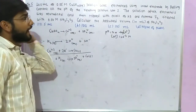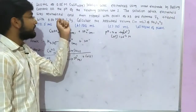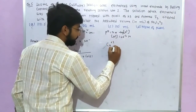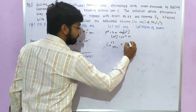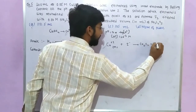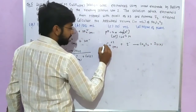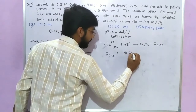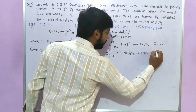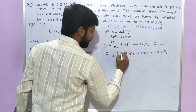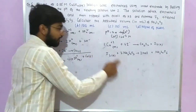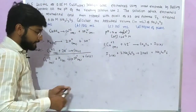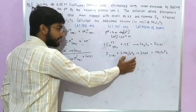After electrolysis, the solution is neutralized, then treated with excess KI. The reaction: 2Cu²⁺ + 4I⁻ → 2CuI + I₂ forms iodine gas. The iodine formed is then titrated with hypo (Na₂S₂O₃): I₂ + 2Na₂S₂O₃ → 2NaI + Na₂S₄O₆. This complete reaction chain is used to calculate the volume of hypo required.